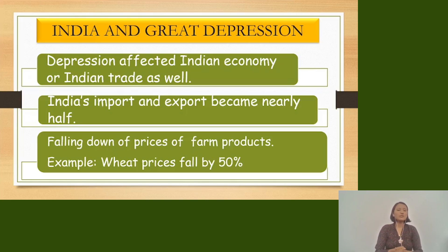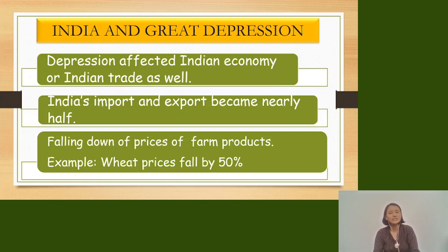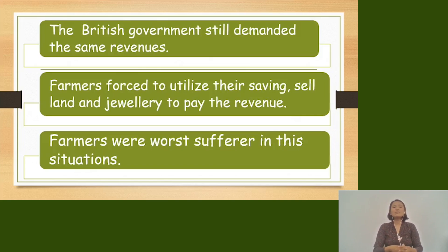During the Great Depression, India's exports and imports became nearly half. There was a sharp fall in the prices of farm products in India. For example, wheat prices fell by 50%. However, the British government still demanded the same tax revenues from Indian farmers, who were already suffering greatly.